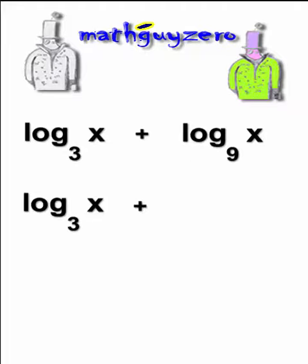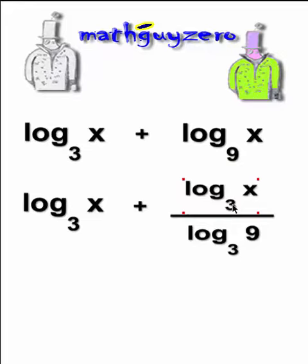It's going to be log base 3. Why did I switch it to base 3? Because the other term is in base 3. So log base 3 of X divided by log base 3 of 9. That's the change of base rule.